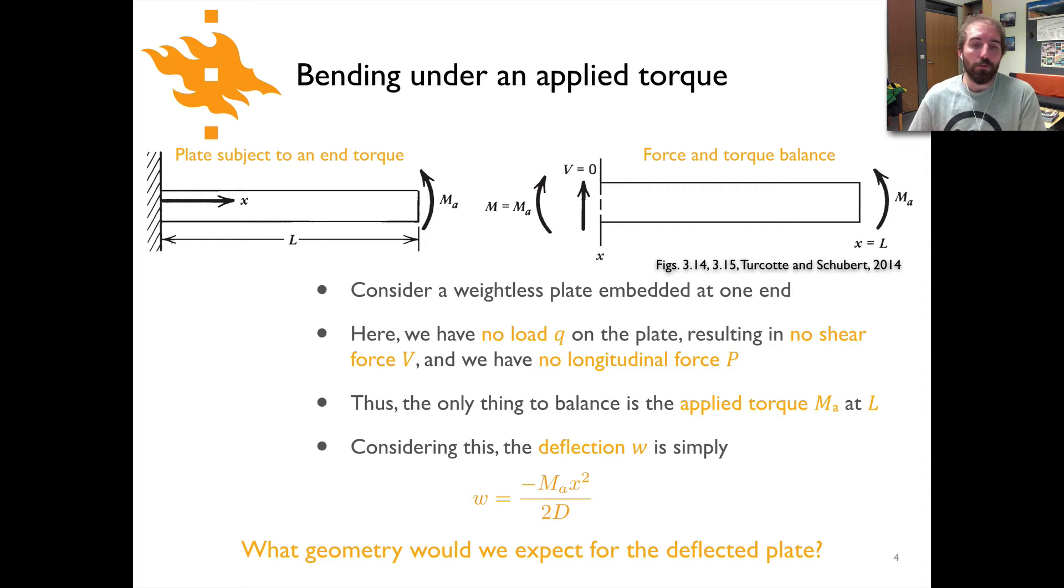Okay, well hopefully you've come up with something along these lines. We can see here that our deflection W is going to be a function of M, which is a constant, D, which is a material property of the plate and can be considered a constant, and then x squared is our only variable. So the deflection is going to vary as a function of x squared. If you remember from a basic geometry class, if you've got a deflection that's equal to something like the distance along the axis squared, that's going to take the form of a parabolic or parabola-shaped deflection.